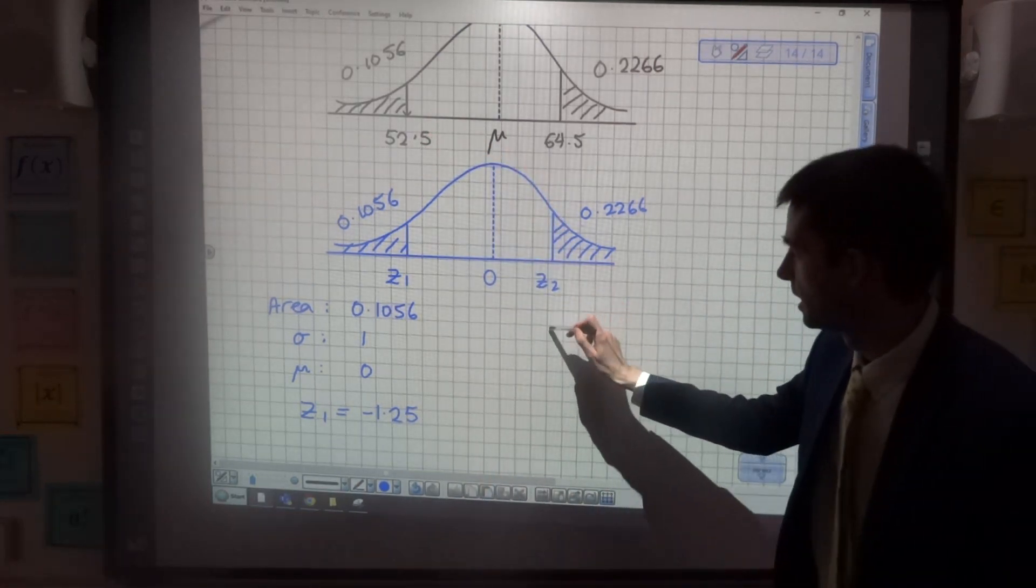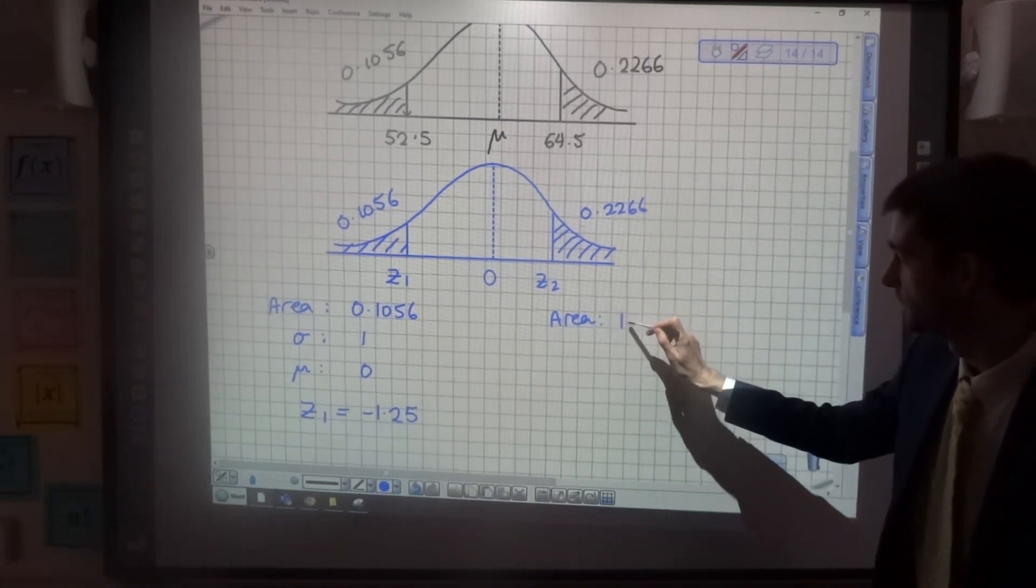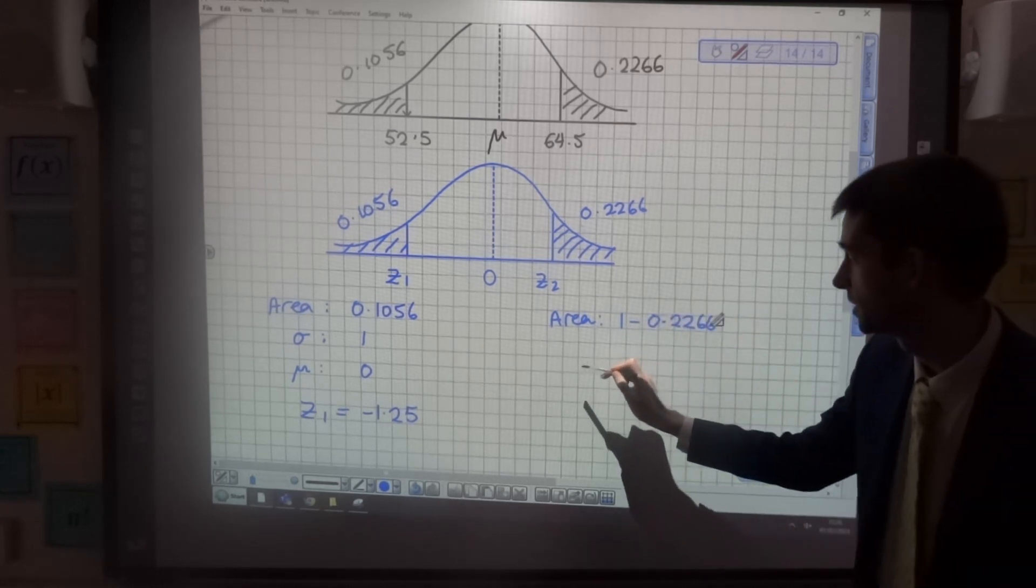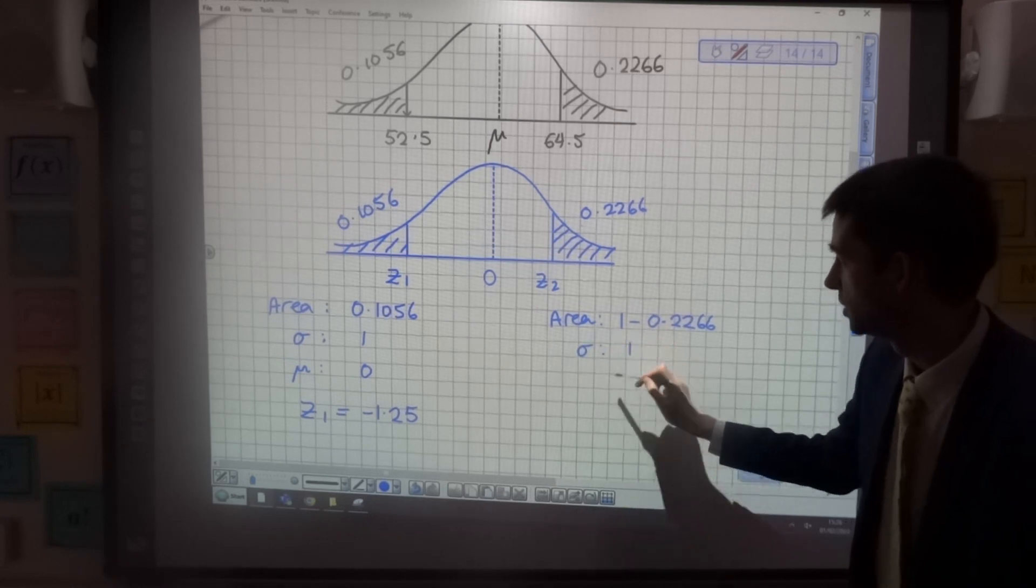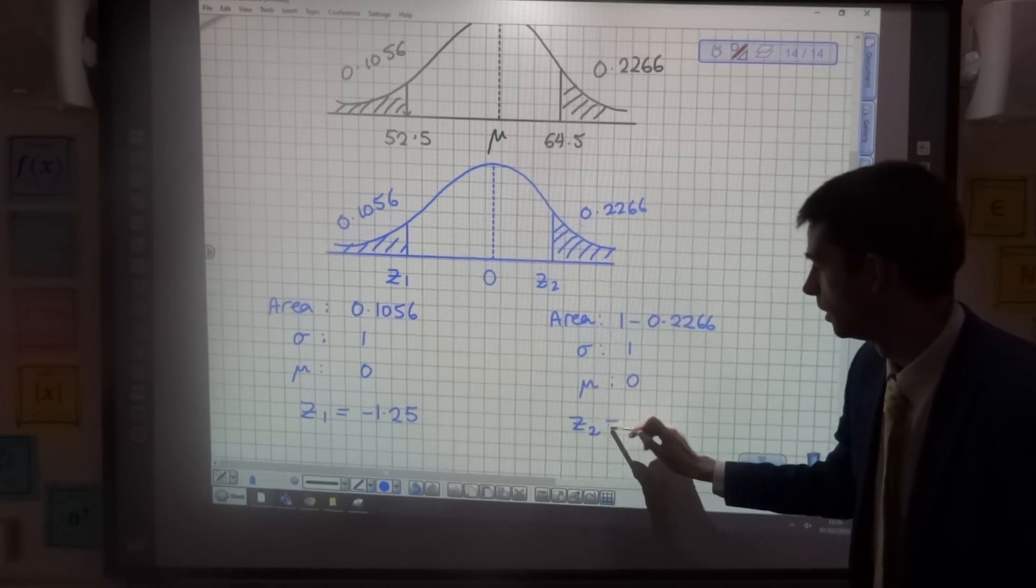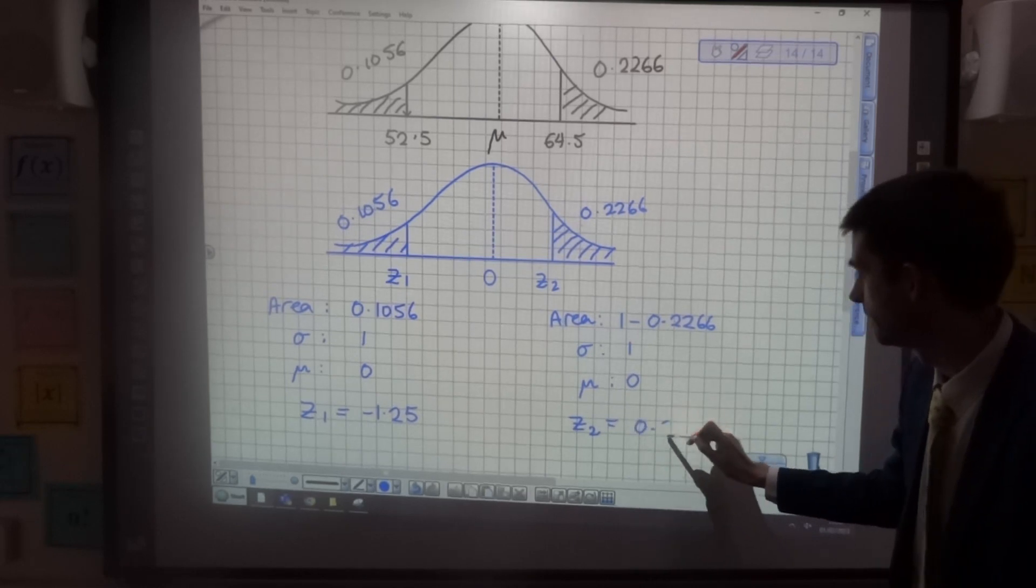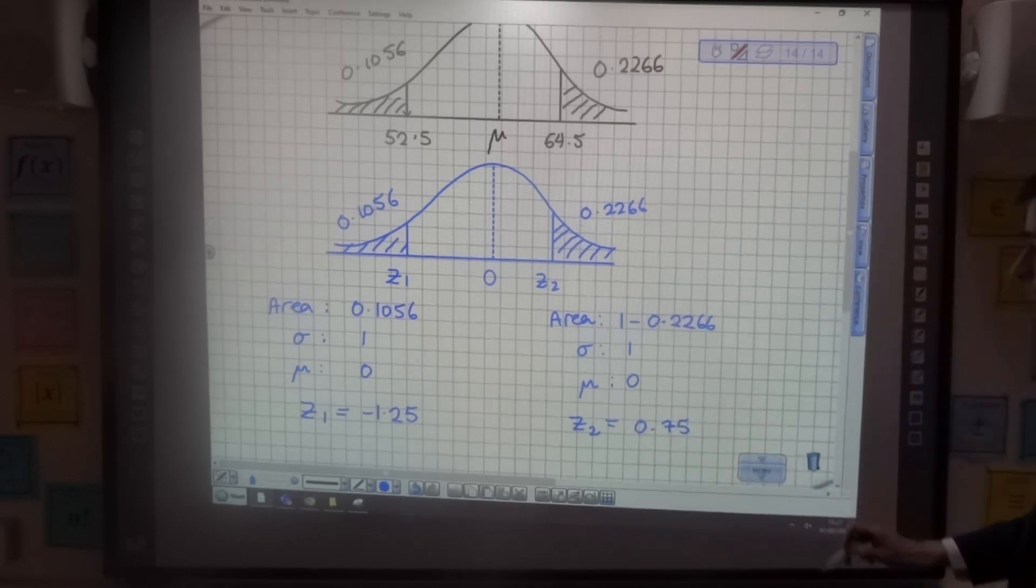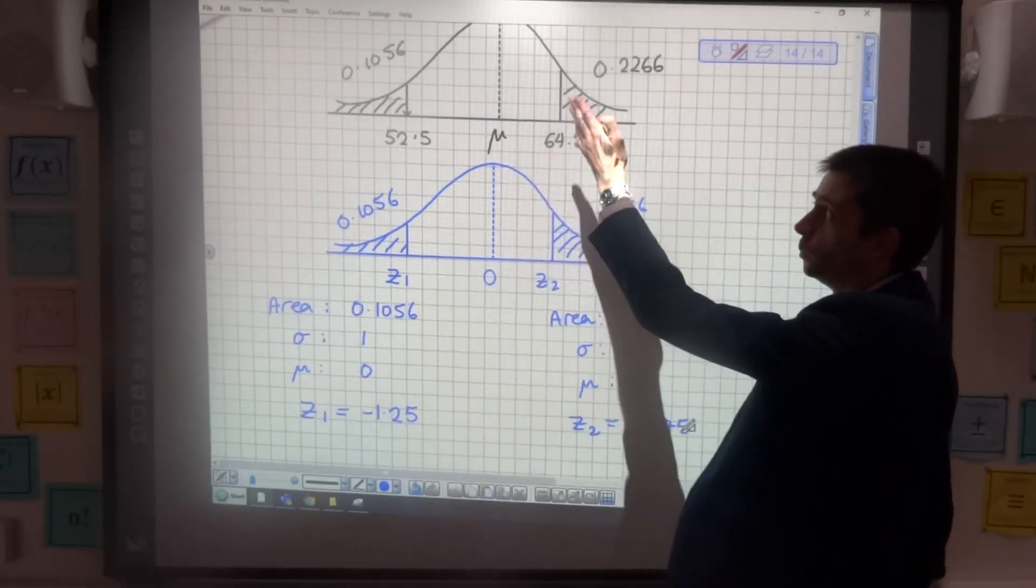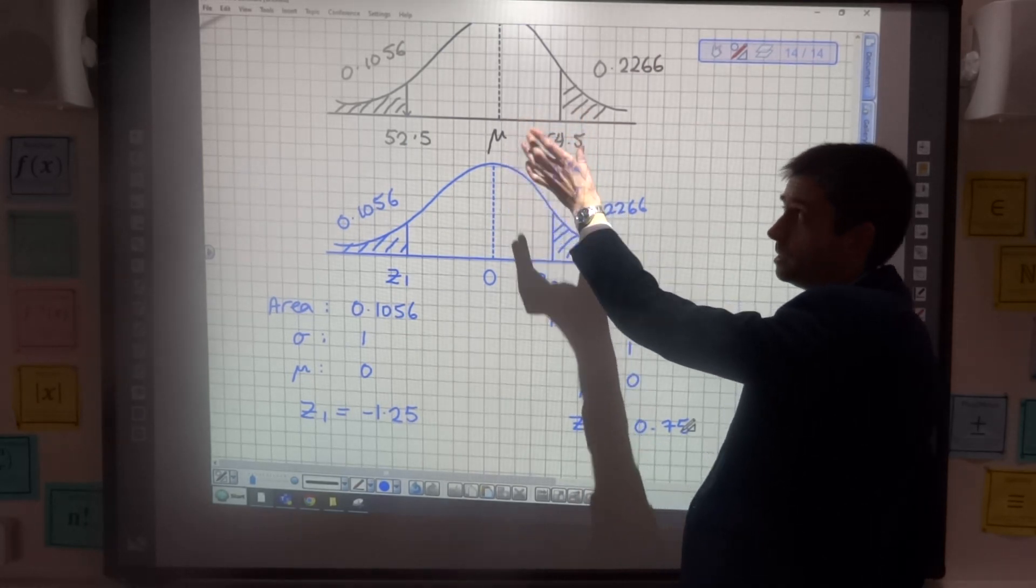Looking at z2, then. The area, remember, I said we want the area to the left. So I'm not going to use 0.2266. I'm going to use 1 minus 0.2266. Standard deviation is still 1, mean is still 0. And using the inverse normal function on the calculator, z2 comes out as 0.75. So z2 is 3 quarters of a standard deviation above the mean 0, which means that 64.5 is 3 quarters of a standard deviation above the mean, mu.